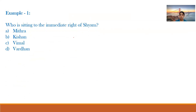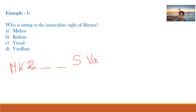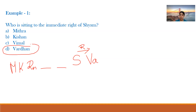Sub-question 1: Who is sitting to the immediate right of Sham? From our arrangement: Mitra, Kishan, Rajan, [blank], [blank], Sham, Vardhan. The immediate right of Sham is Vardhan. The answer is option D: Vardhan.